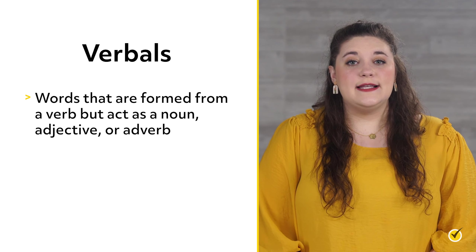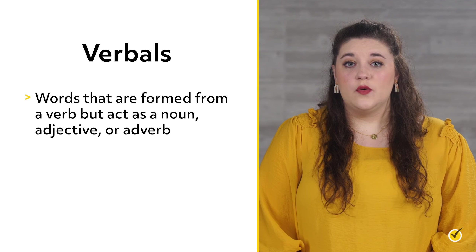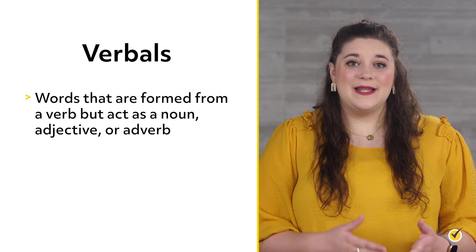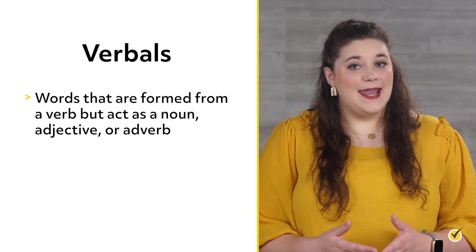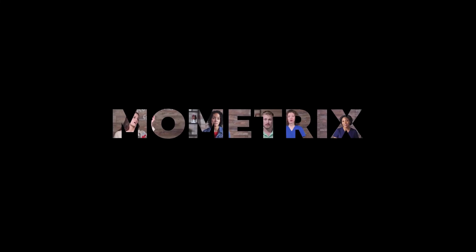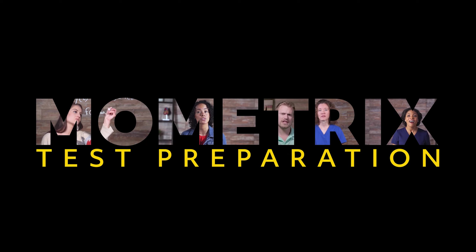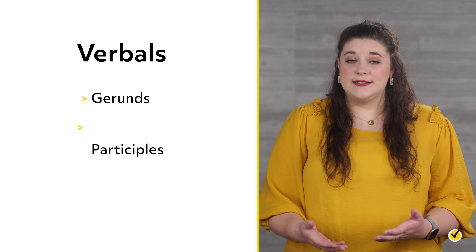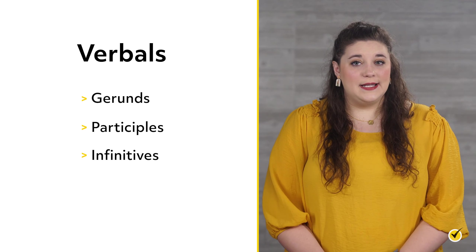Sometimes, words that are usually categorized as one part of speech can act as other parts of speech. In this video, we'll be discussing verbals — words that are formed from a verb but act as a noun, adjective, or adverb. There are three types of verbals: gerunds, participles, and infinitives.